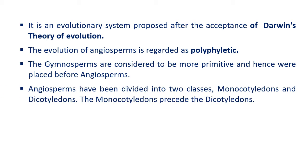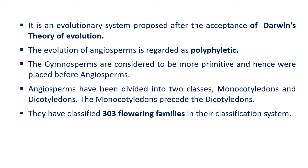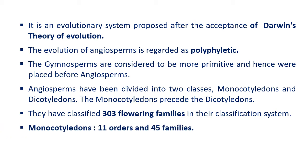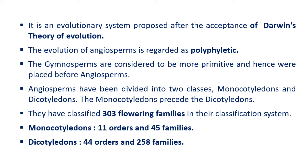Angiosperms have been divided into two classes: monocotyledons and dicotyledons. Monocotyledons precede the dicotyledons. They classified 303 flowering families in their classification — monocotyledons with 11 orders and 45 families, and dicotyledons with 44 orders and 258 families.